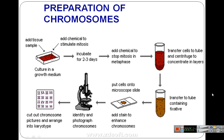After stopping mitosis in metaphase, transfer the cells to a tube and centrifuge to concentrate them into layers. We get different layers containing different kinds of cells and chromosomes. These are then transferred to a microscopic slide for observation.